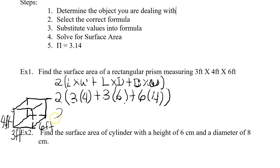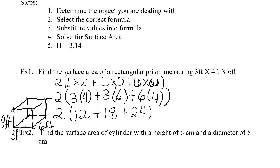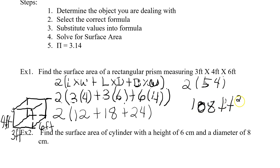When we figure this out we have two times: three times four gives us twelve, plus three times six gives us eighteen, plus six times four gives us twenty-four. That gives us two times fifty-four, which is one hundred eight feet squared. Don't forget your units — we're working in feet and because we're finding surface area our answer is squared.